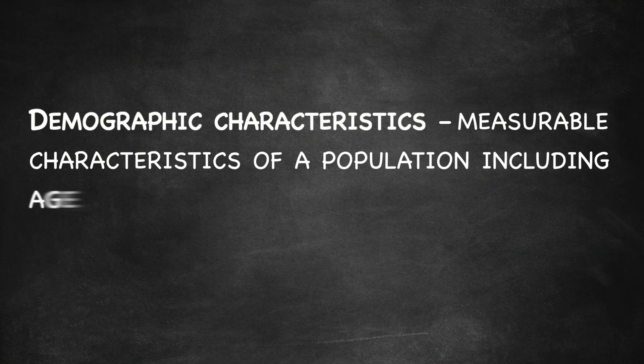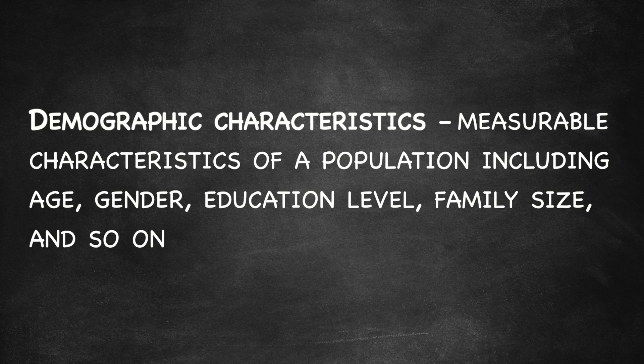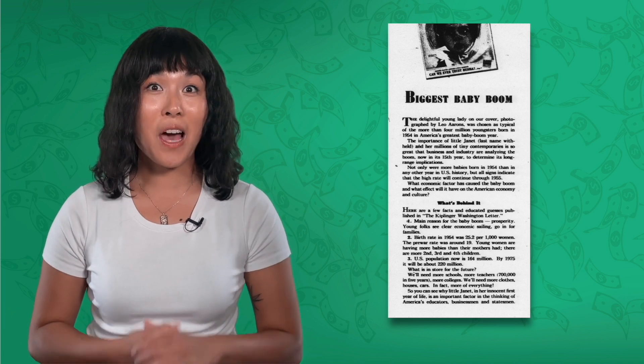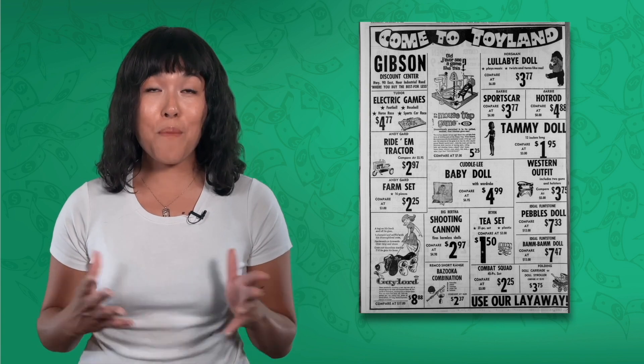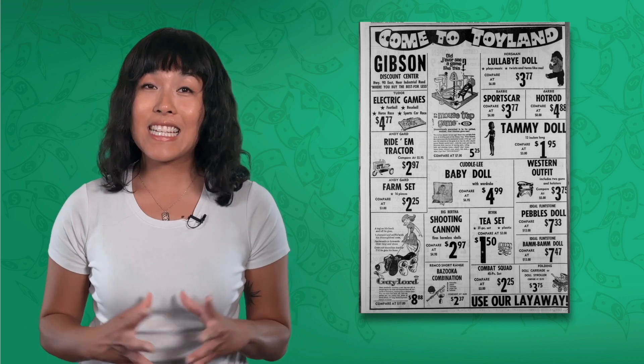Demographic characteristics are measurable characteristics of a population, including age, gender, education level, family size, and so on. After World War II, American soldiers returned home and began starting families, leading to a population increase that historians refer to as a baby boom. During the 1950s and 60s, American companies designed and produced new toys, clothes, and even cars designed to appeal to these boomers.